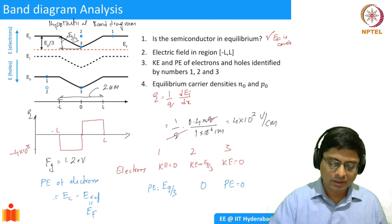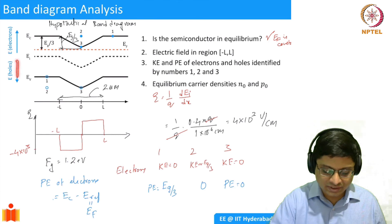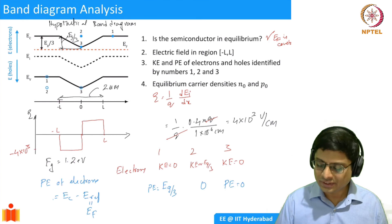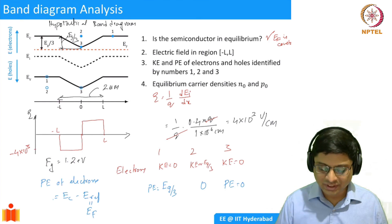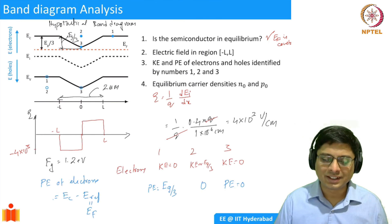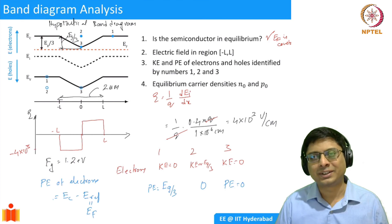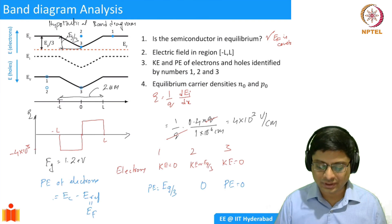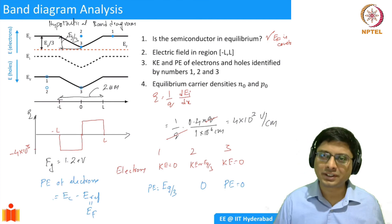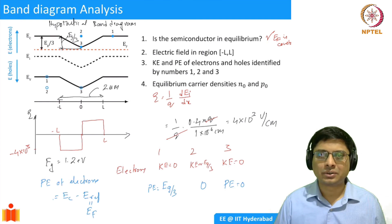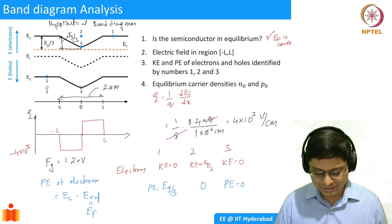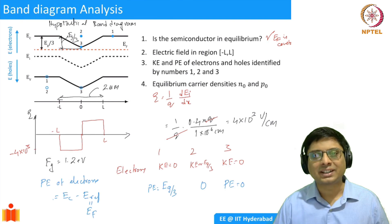For holes, remember that potential energy increases in the downward direction, while electron energy increases upward. There is subtlety here around energy conservation at position 2 which we will discuss in detail later. For now, focus on being able to look at a band diagram and identify whether an electron has zero or non-zero kinetic energy, and what the electric field is in different regions.